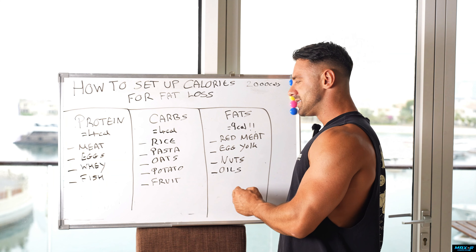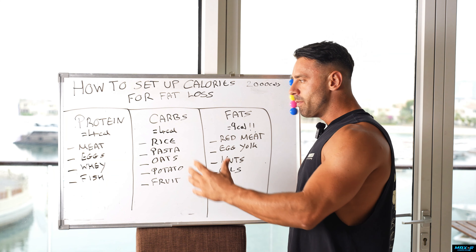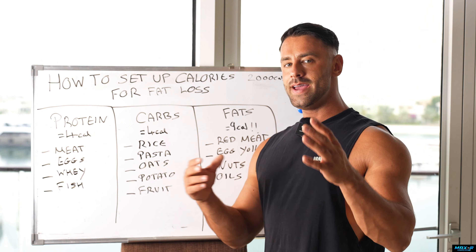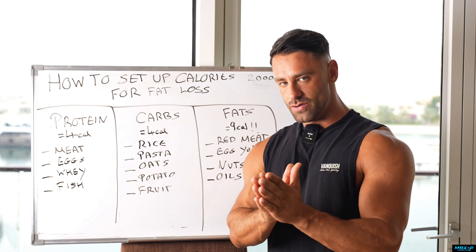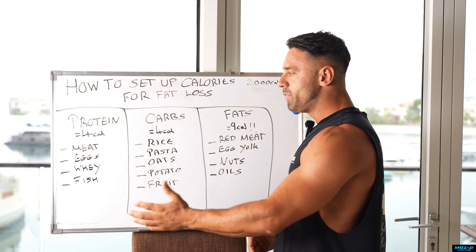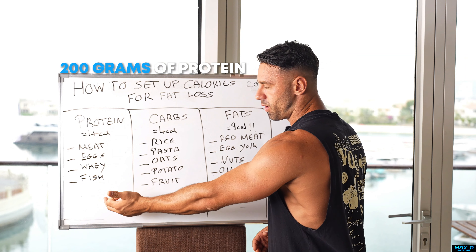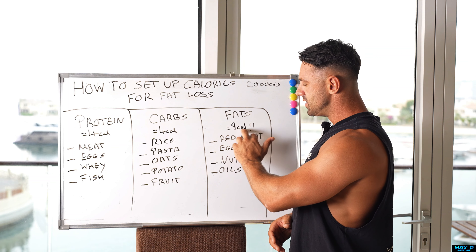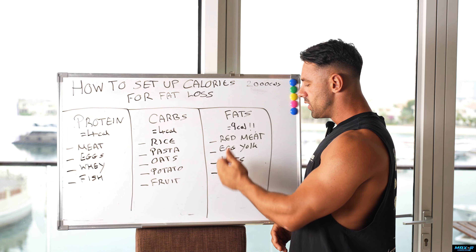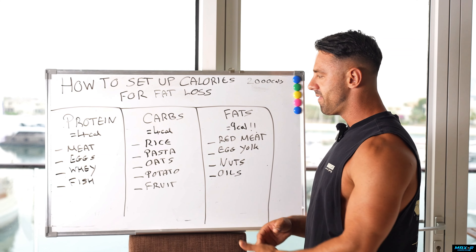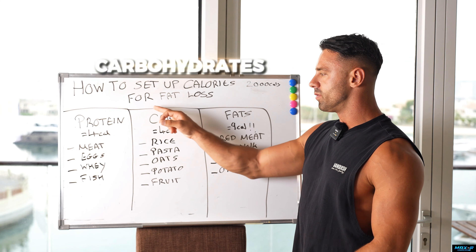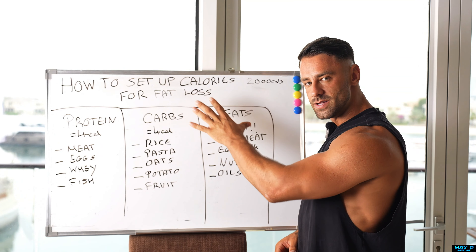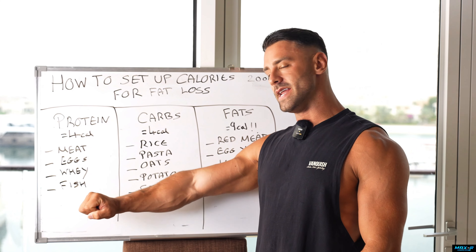That leaves you with carbohydrates and fats. Some people will do 40% protein, 40% carbs, 20% fats. I'm here to kind of debunk this and say you can do whatever you want. A lot of people will say you've got your 200 grams of protein and then you'll get 20% of your calories from fats. So you'd have 20% of your calories coming from fats, and then the rest of your calories would come from carbohydrates.